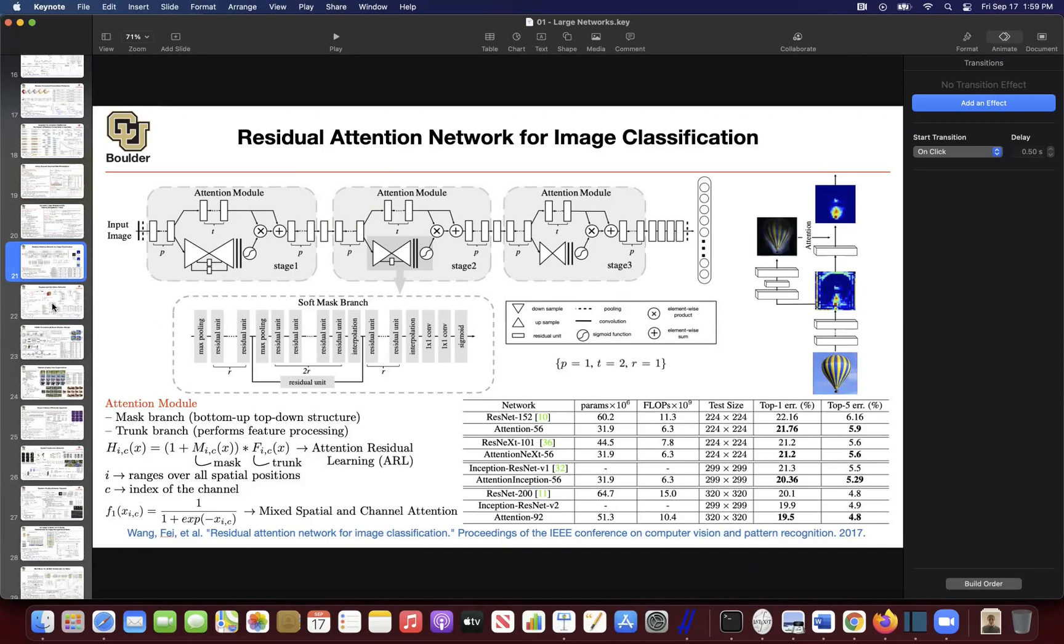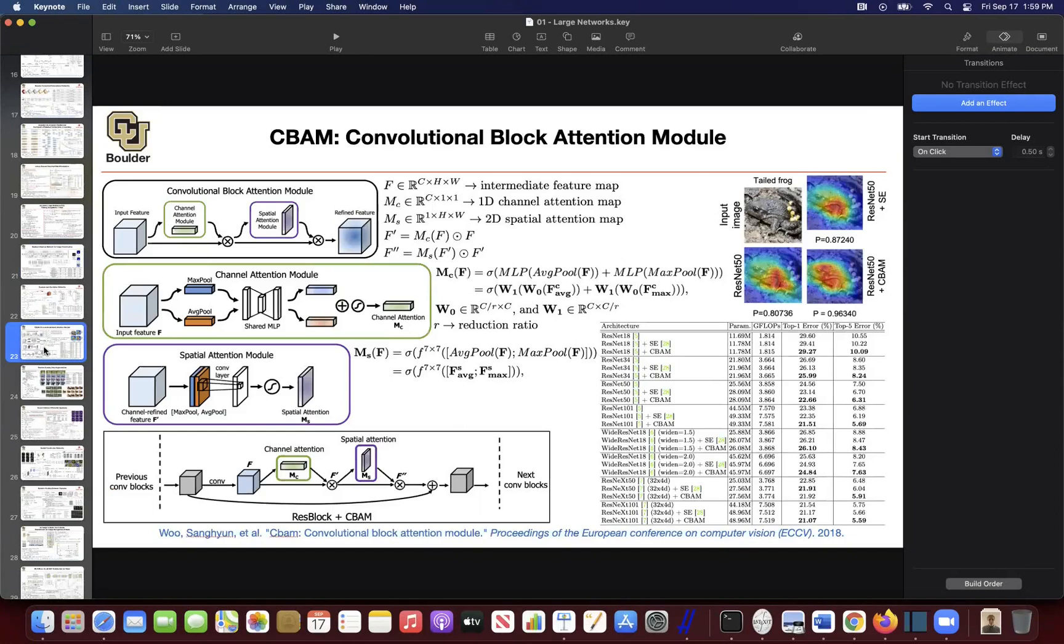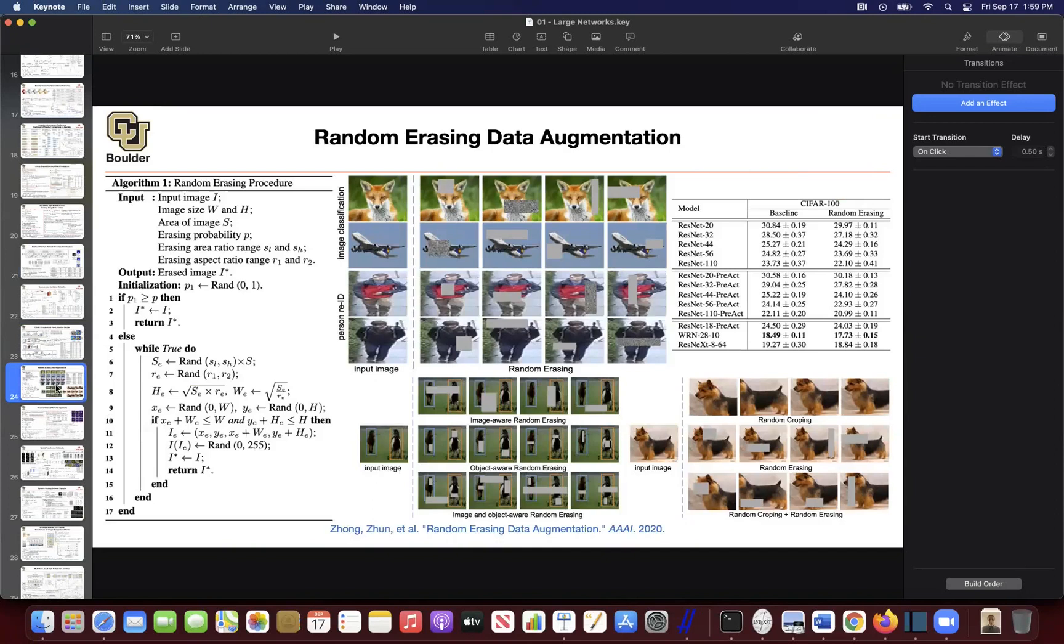We started to introduce attentions in a series of papers. These are simplified attentions: one was across space, the other is across channels, the other is a combination of the two—CBAM across channels and across space. At the same time, we introduced a new type of data augmentation.